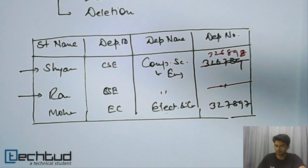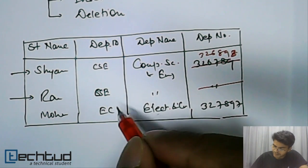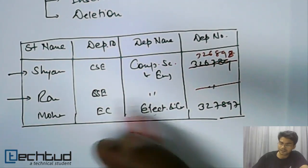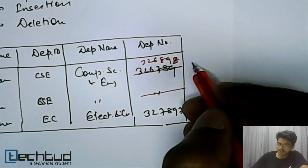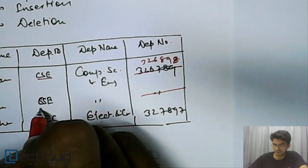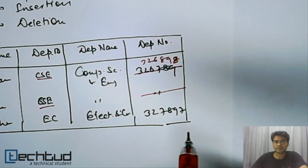Insertion anomalies: let's say I am inserting another attribute for computer science department that is number of faculty. This number of faculty also has to be inserted everywhere related to this computer science department.